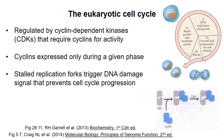To start, I want to briefly review the eukaryotic cell cycle, which is characterized by four main stages. In the G1 phase, the cell is growing and carrying out normal metabolic activity. In the S phase, DNA replication occurs. This is followed by G2 phase, in which the cell continues to grow and prepares for cell division. And then M phase, or mitosis, is when a cell divides into two daughter cells.